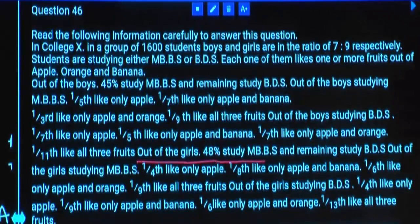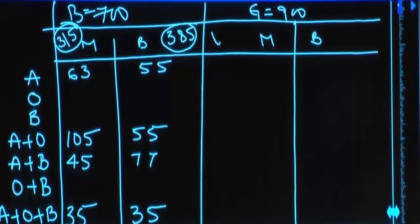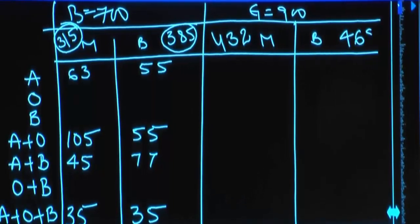Out of girls, 48% study MBBS. 48% of 900: 50% minus 2% — 50% is 450, 2% is 18, so 450 minus 18 is 432. The remaining girls are 468, who are in BDS.